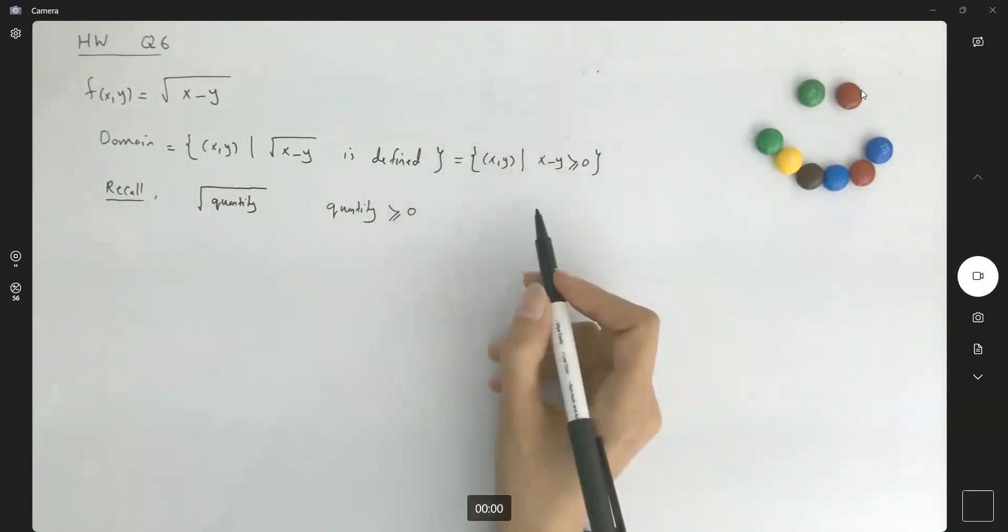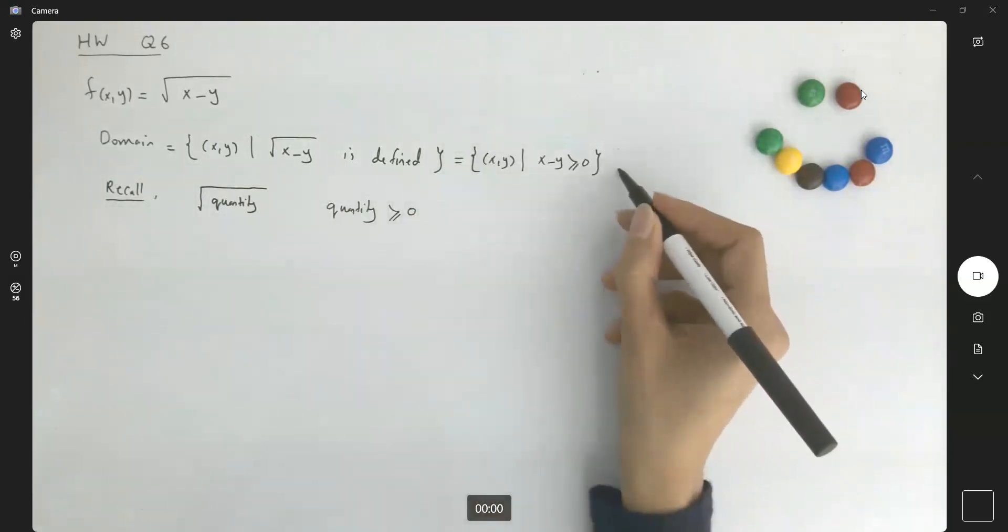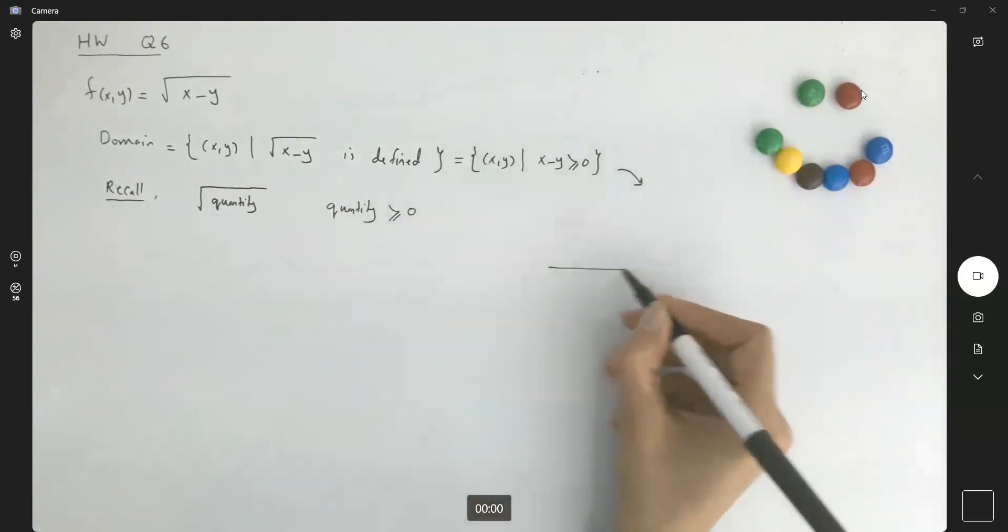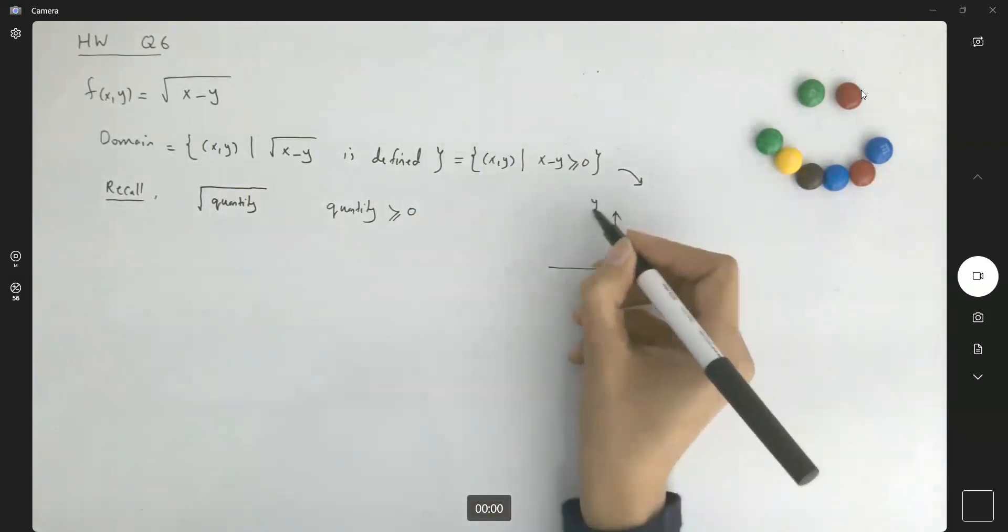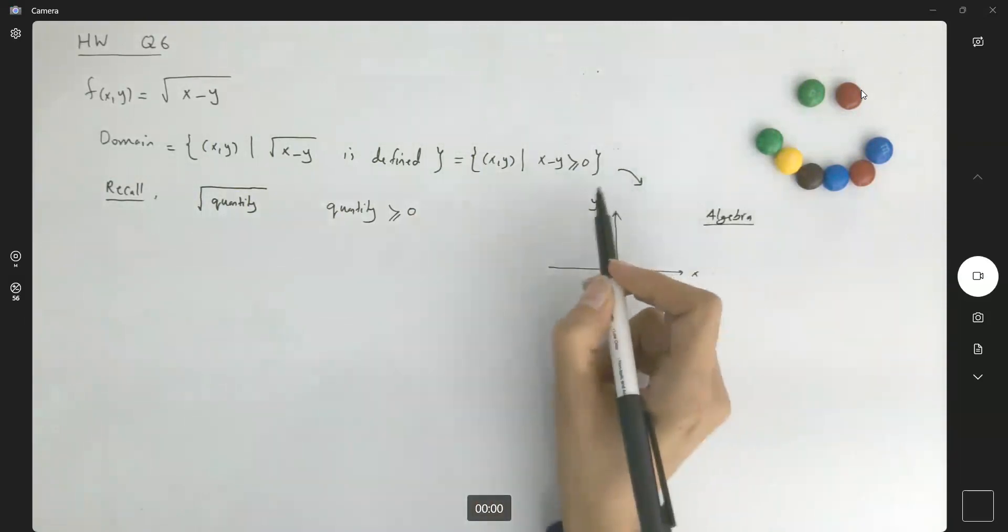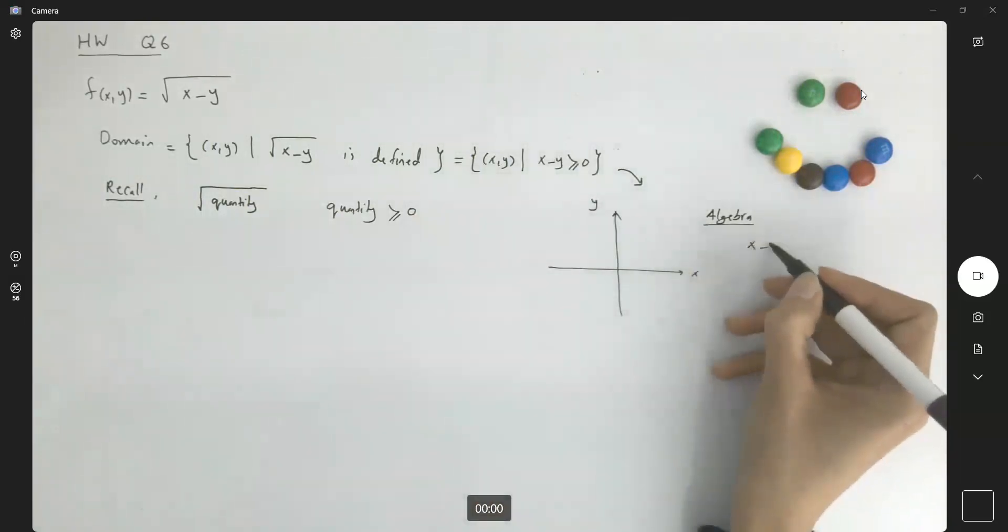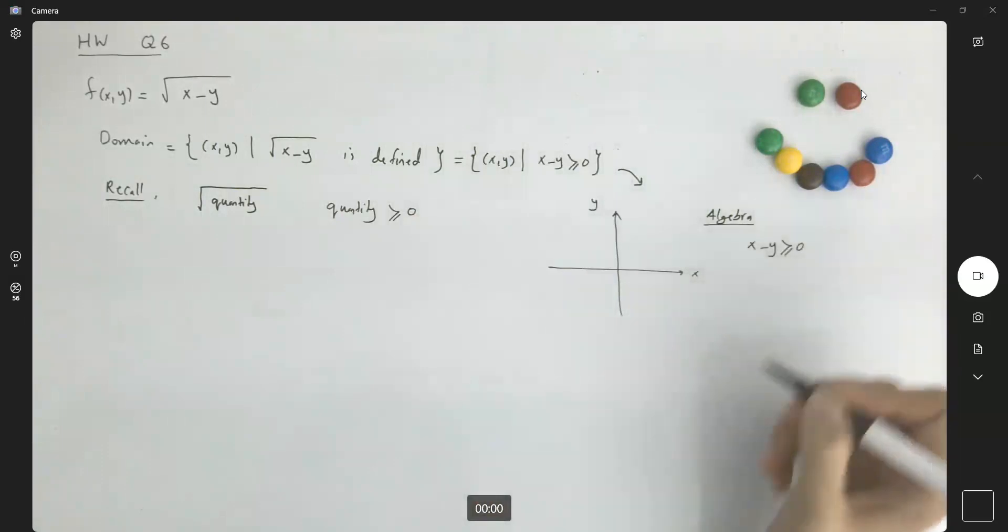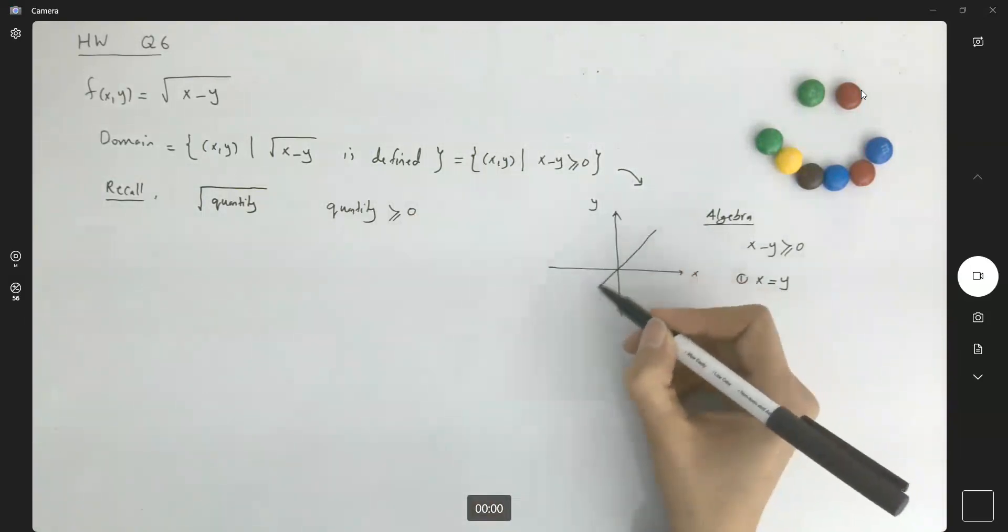If you want to take a look at the graph, if you want to visualize this domain, we're just going back to algebra. In algebra, we learn how to graph an inequality: x minus y is larger than or equal to zero. So first, graph x equals y, which is just this line, increasing line here.